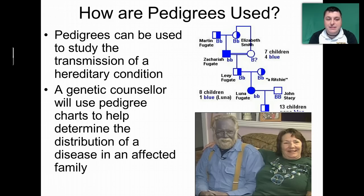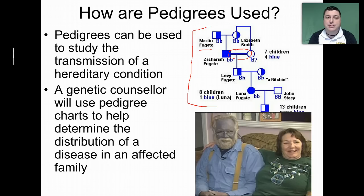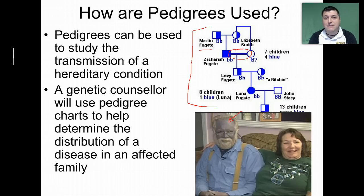This is a pedigree for a small portion of the family called the Blue People of Kentucky — the Fugate family. As a result of some consanguineous relationships, such as first cousins having offspring, a trait called methemoglobinemia occurred in their family, which resulted in a blue hue in the skin of the individuals. People marrying into the Fugates could use the pedigree information to determine what the chances were of that being passed down to the next generation.